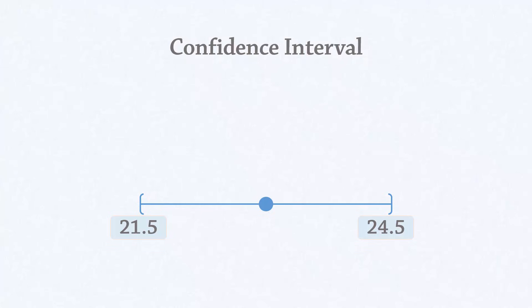We refer to the smaller value as the lower confidence limit, LCL, and the higher value as the upper confidence limit, UCL.